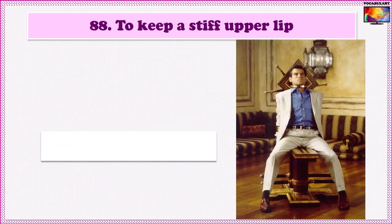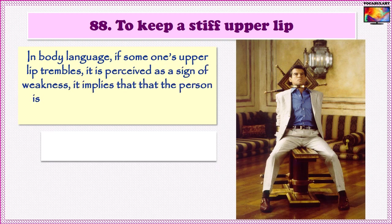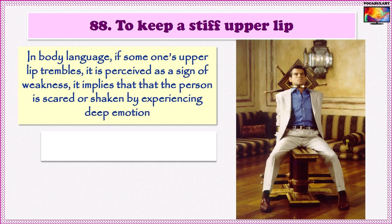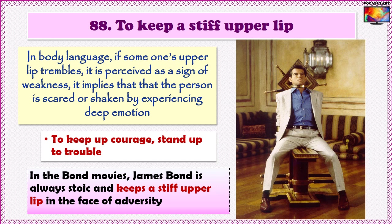Idiom No. 88 is 'To keep a stiff upper lip.' In body language, if someone's upper lip trembles, it is perceived as a sign of weakness. When a person's upper lip begins to tremble, it is one of the first signs that the person is scared or shaken by experiencing deep emotion. On the other hand, one who has a stiff upper lip displays courage in the face of adversity and stands up to trouble. For example: 'In the Bond movies, James Bond is always stoic and keeps a stiff upper lip in the face of adversity.'